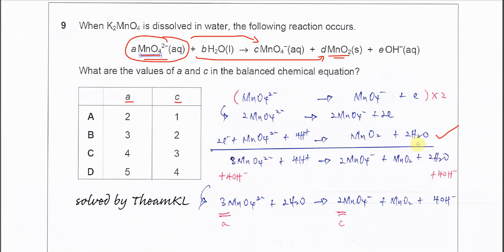Then balance the hydrogen by adding H⁺ on the left-hand side. When all elements are balanced, you need to balance the charge. On the right-hand side it is neutral, so the left-hand side also needs to be neutral. Here is positive 4 and here is negative 2, so you need to add two electrons, then it will be neutral.